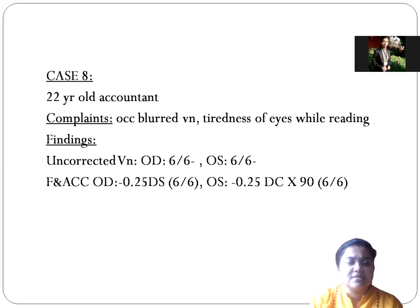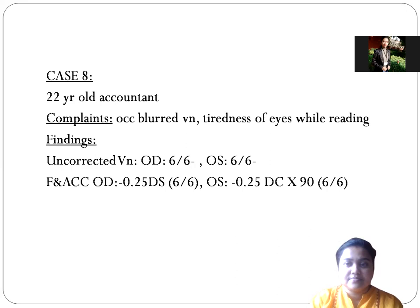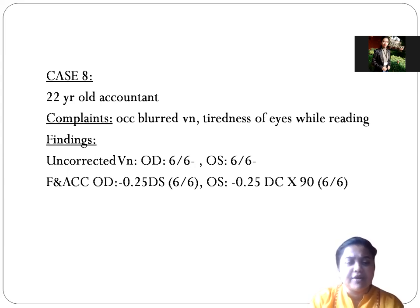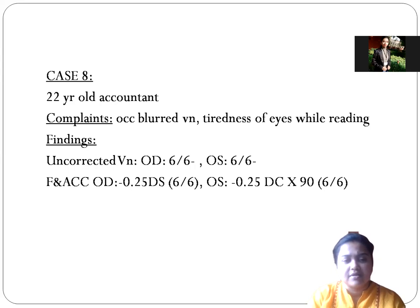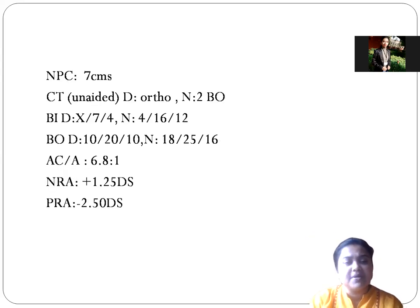Uncorrected visual acuity was 6/6 in both eyes. Retinoscopy and acceptance was minus 0.25 diopters in the right eye, and in the left eye it was 0.25 cylinder into 90. Sometimes with this 0.25 power we can give a correction, but normally we need not give it — it depends on the case.